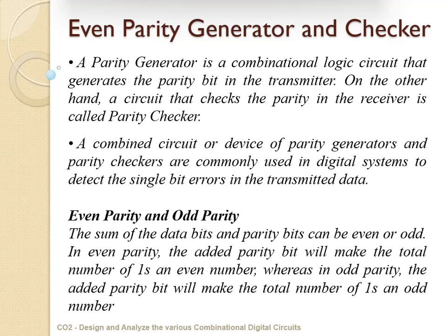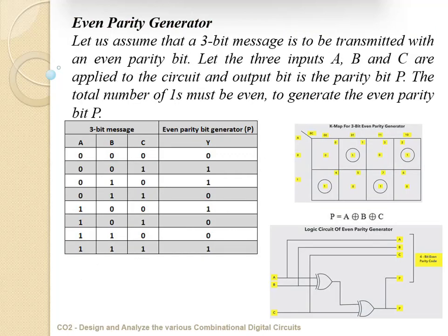First we will start with the even parity generator and then move on to the even parity checker. Let us assume a three-bit message is to be transmitted with an even parity bit. Let us consider the inputs to be A, B, C applied to the circuit, and the output bit is the parity bit P. The total number of ones must be even to generate the parity bit.